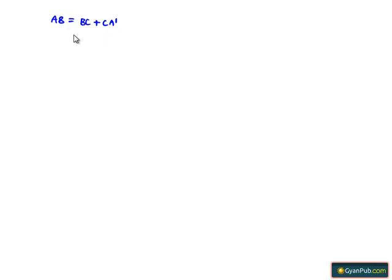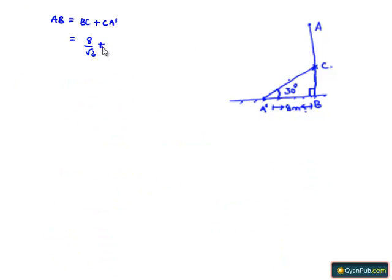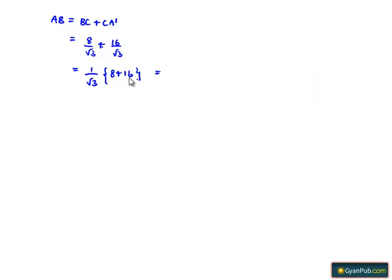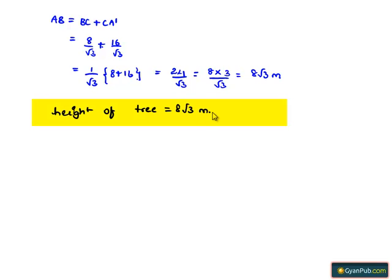The height of the tree AB equals BC plus CA', which is 8 by root 3 plus 16 by root 3. Taking 1 by root 3 common, we get 8 plus 16, which equals 24 by root 3. This can be written as 8 into 3 by root 3, which equals 8 root 3 meters. Therefore, the height of the tree is 8 root 3 meters.